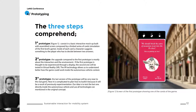In the second prototype, the upgrade compared to the first is mostly about the interaction and environment. If the first prototype is thought to be experienced through a display — for example, a laptop display — the second one will be tested in virtual reality. The virtual reality technology allows us to better understand how the game could work in the autonomous vehicle context.